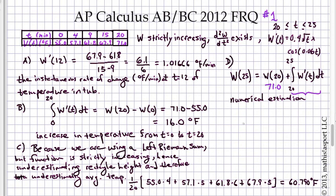We get 71.0 plus 2.04315. And so I get a final answer of 73.04315 degrees Fahrenheit for the temperature at time T equals 25.